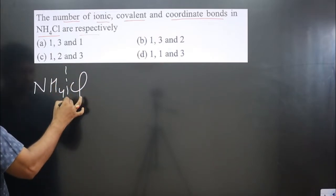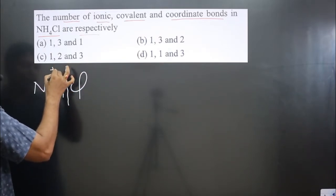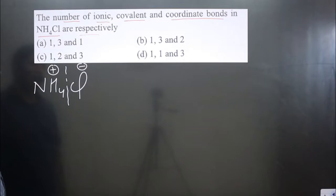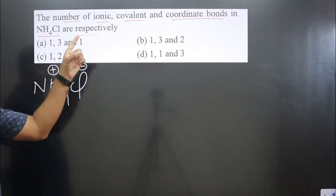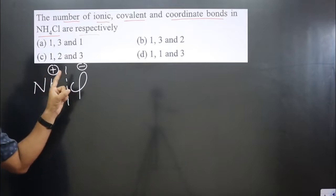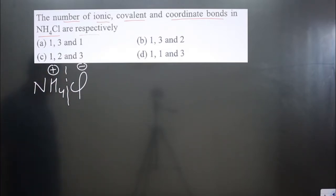It will break into ammonium ion and chloride ion. So it is very clear: one ionic bond is there. One positive, one negative - one ionic bond between them.